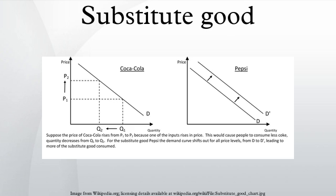Substitute goods not only occur on the consumer side of the market but also the producer side. Substitutable producer goods would include petroleum and natural gas.